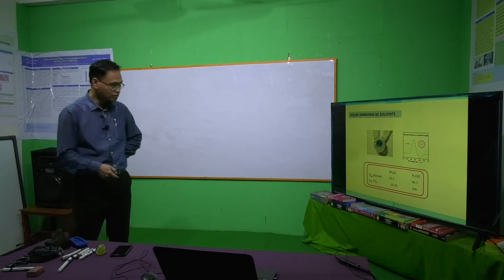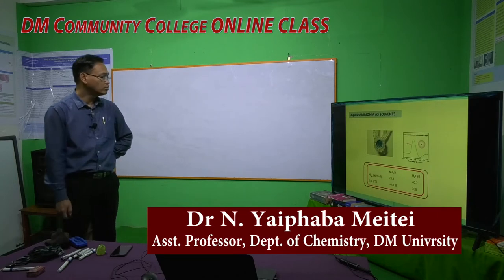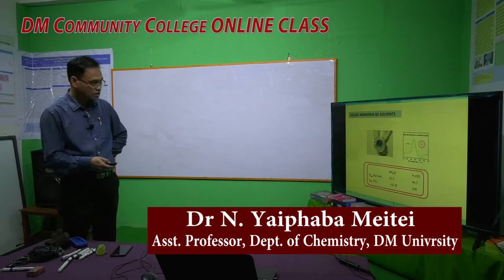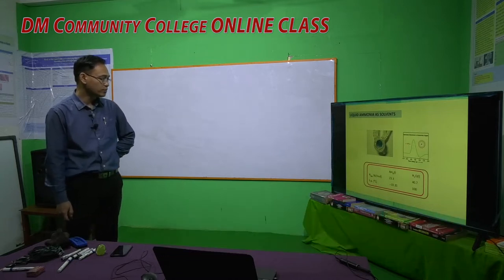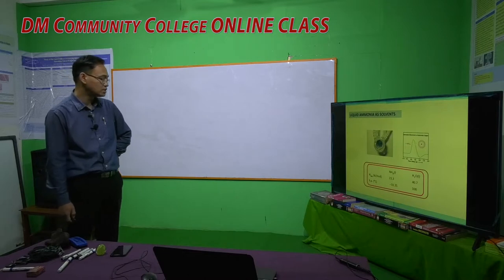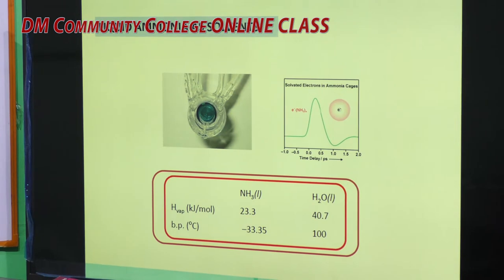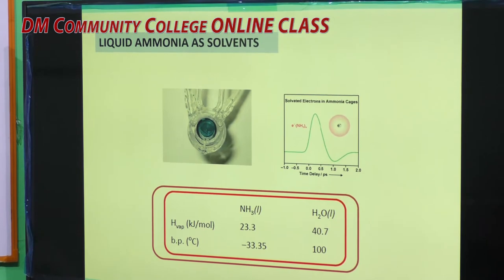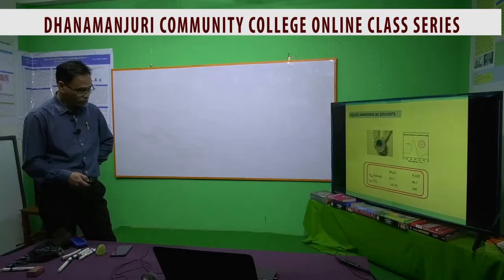This topic is liquid ammonia, which is in our syllabus. As we know, ammonia at room temperature is a gas because its boiling point is minus 33.35 degrees centigrade, whereas the boiling point of water is 100 degrees centigrade. So ammonia turns into vapor at minus 33.35 degrees centigrade, meaning ammonia is a vapor or gas at room temperature.